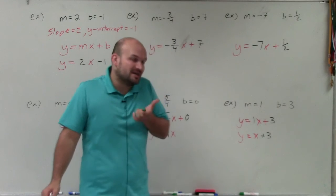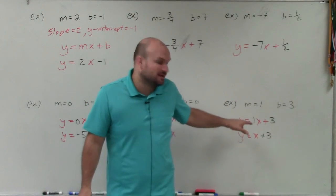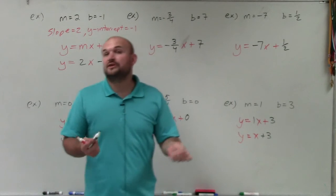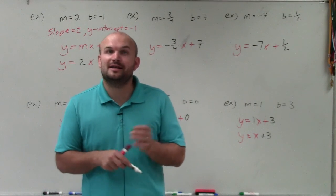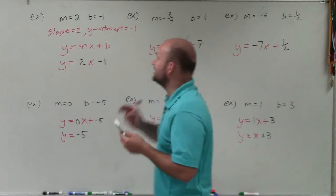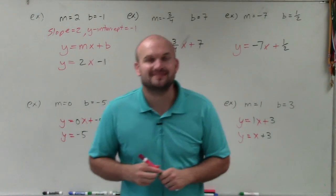So it's just important to understand, though, that there is a 1 that's always there. So there you go, ladies and gentlemen. That is how you write an equation in slope-intercept form when given the slope and y-intercept. Thanks.